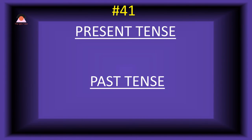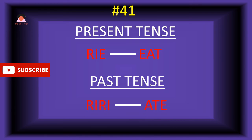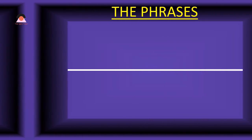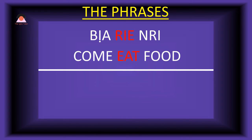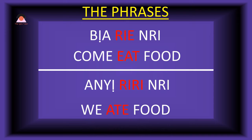Word number forty-one: 'rie,' meaning 'eat.' The past tense of rie is 'riere,' meaning 'eaten.' Present tense phrase: 'bia rie n'ri' — come eat food. Past tense: 'ani-riere n'ri' — we ate food.